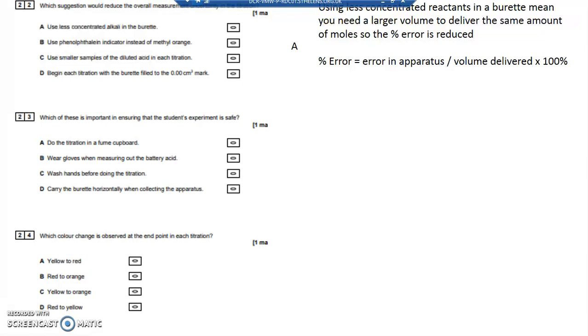Less concentrated alkali means that you've got to deliver more of the alkali to get the same number of moles from the burette. And a larger volume means less of an error.